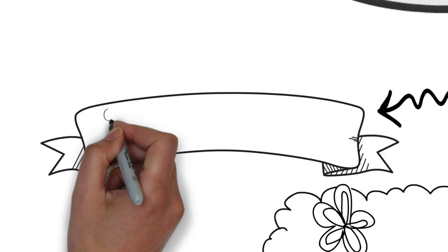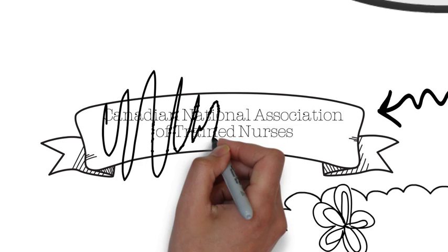In 1908, the Canadian National Association of Trained Nurses was formed by Mary Snively. This name changed to what we currently know as the Canadian Nurses Association in 1924.